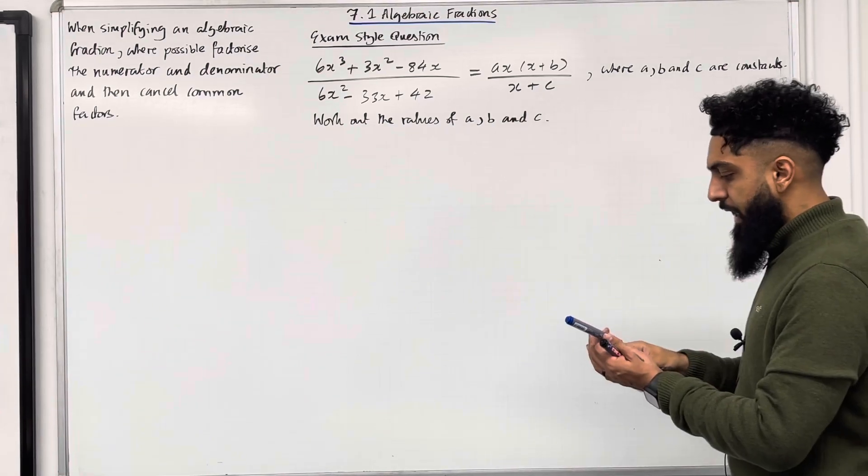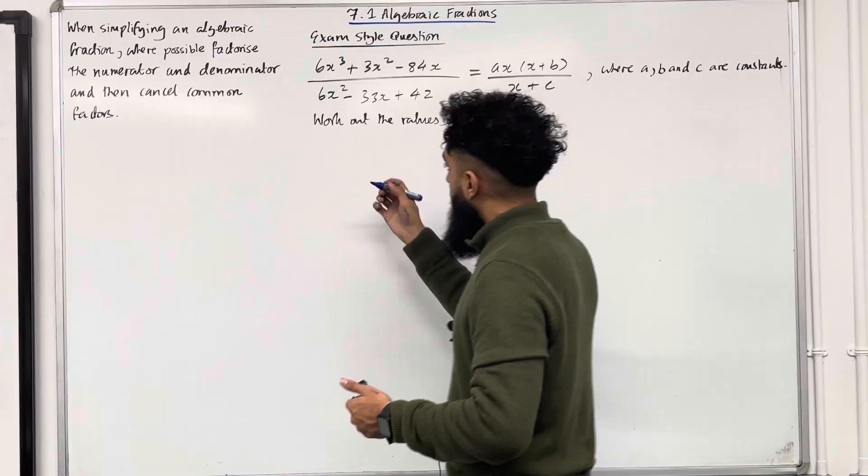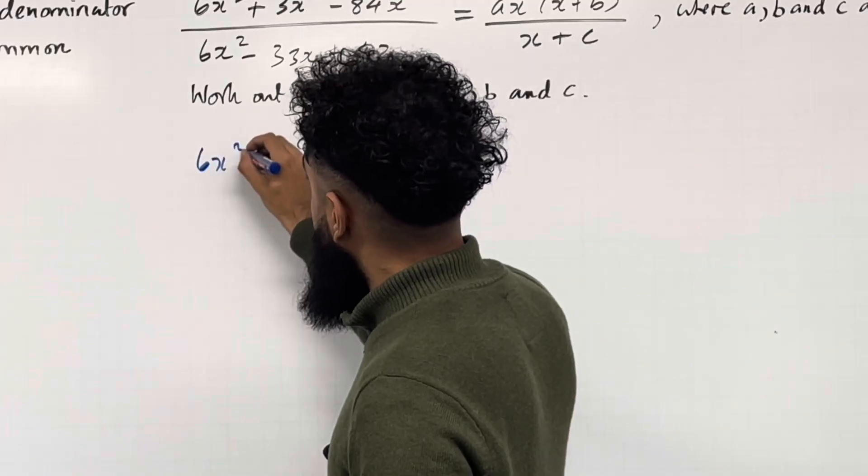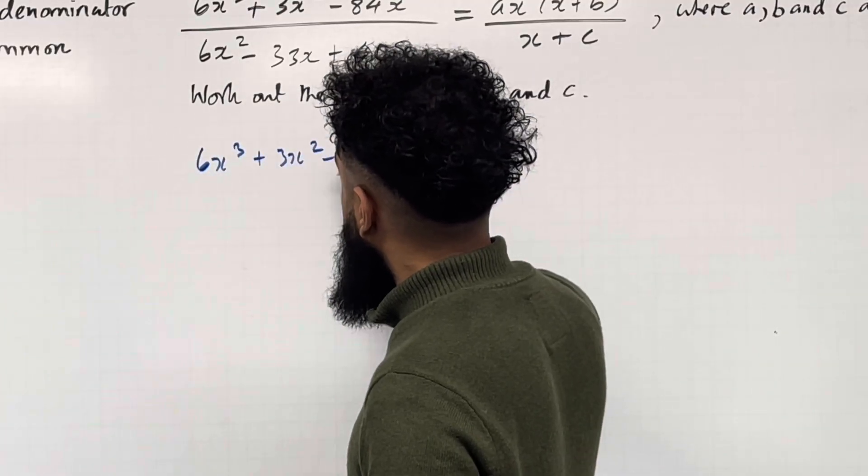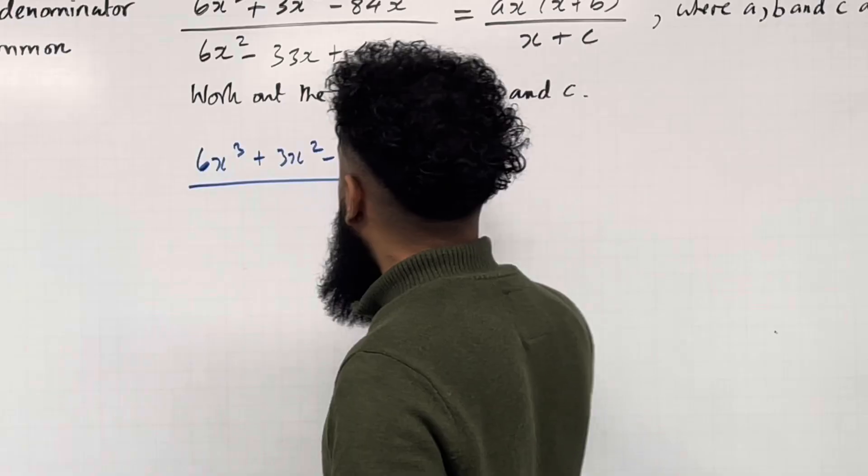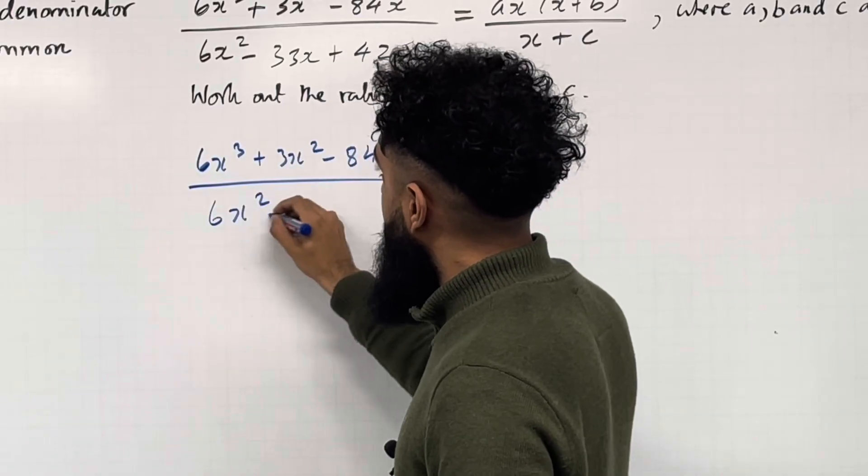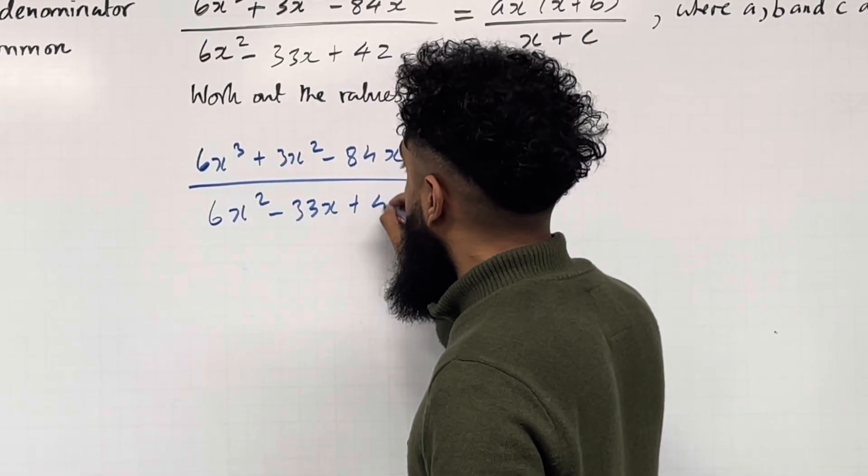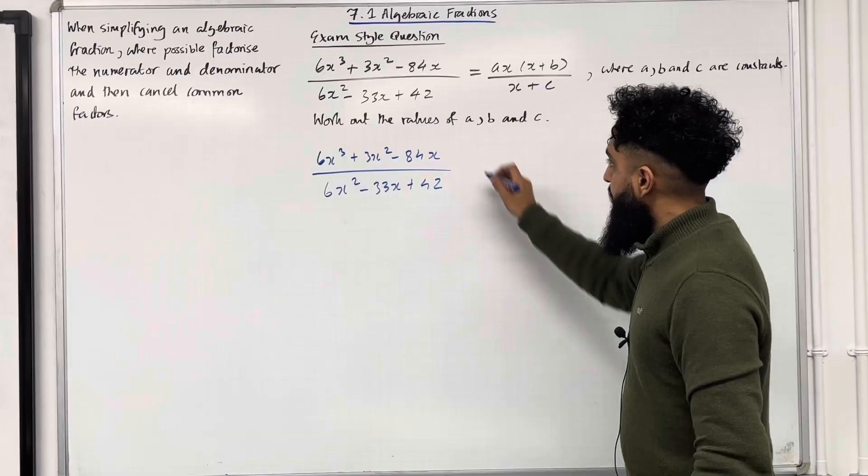Okay, so let's start off with the left-hand side. We've got 6x cubed plus 3x squared minus 84x over 6x squared minus 33x plus 42, equal.